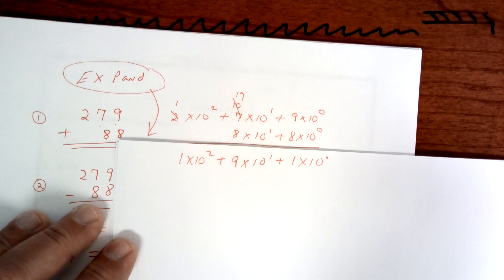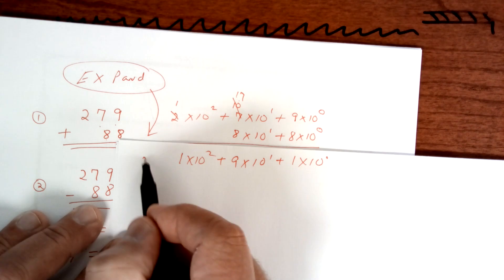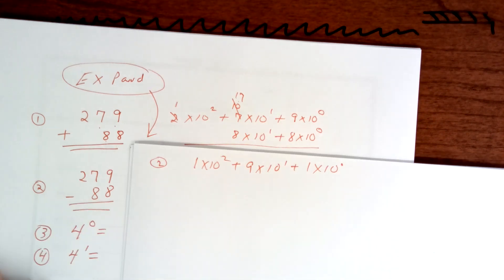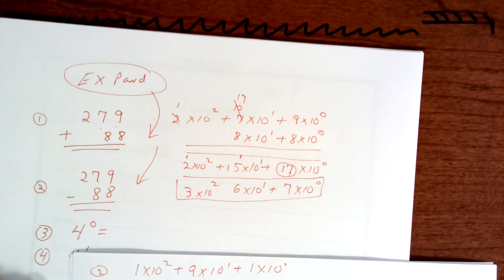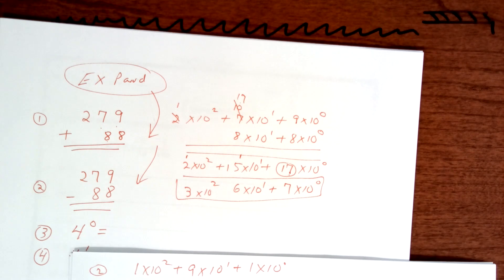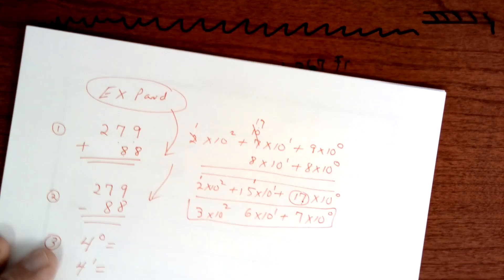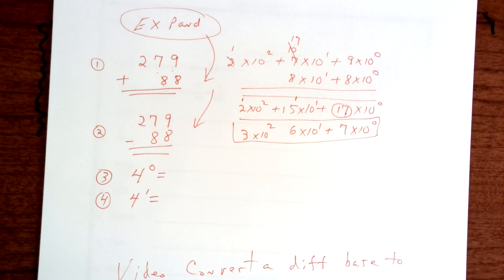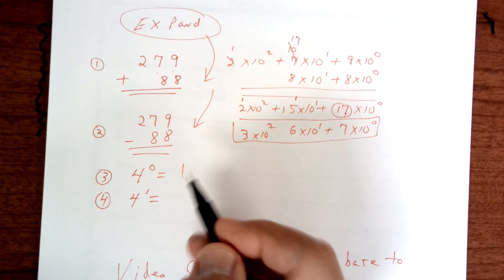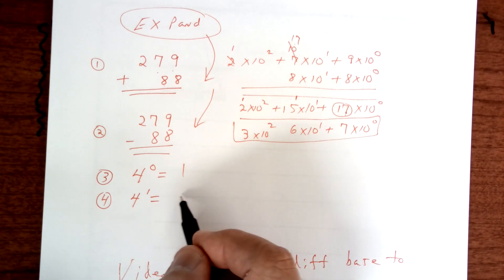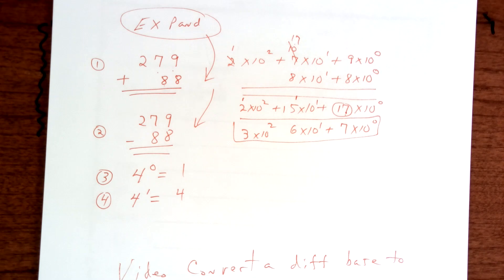And that is number 2 on your bell work today. Let's take a look here. 4 to the zero power — well, anything to the zero power is 1. Anything to the first power is itself. We're going to watch a video but before we do that, copy this one down right here.